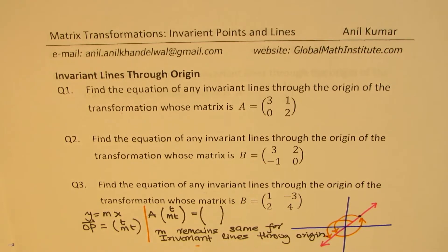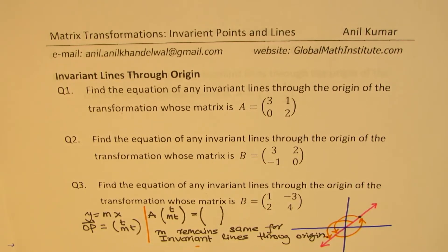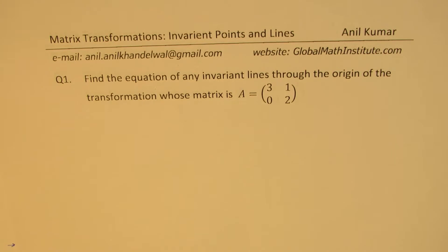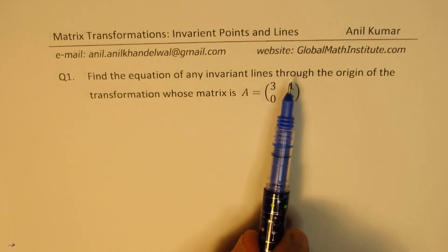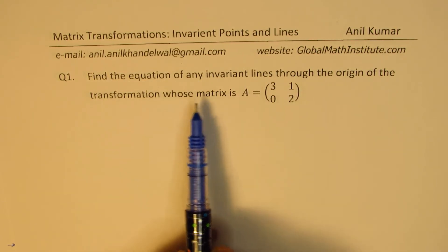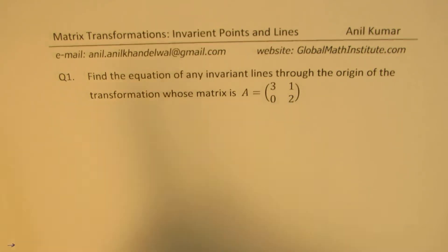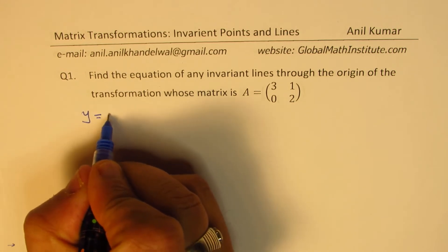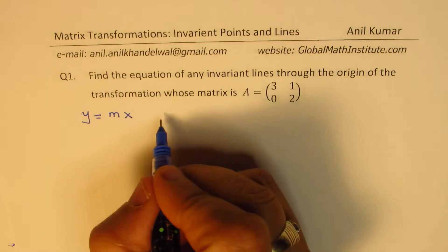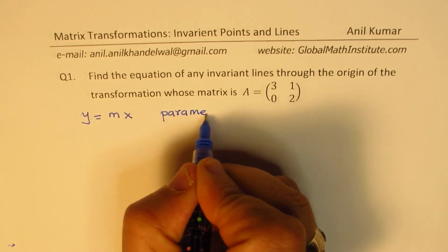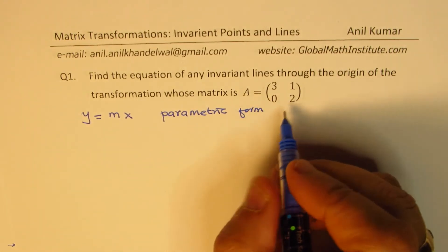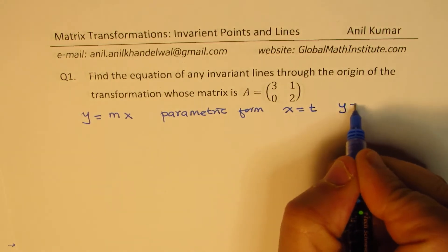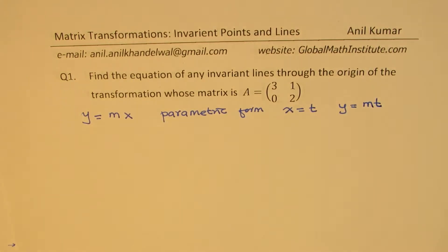So that is the key. Now let's illustrate the same with the help of these three examples. Let's take up the first example: find the equation of any invariant lines through the origin of the transformation whose matrix is A equals 3, 1, 0, 2. In general, the line will be Y equals MX. So we have a parametric form where if X equals T, then Y equals MT.